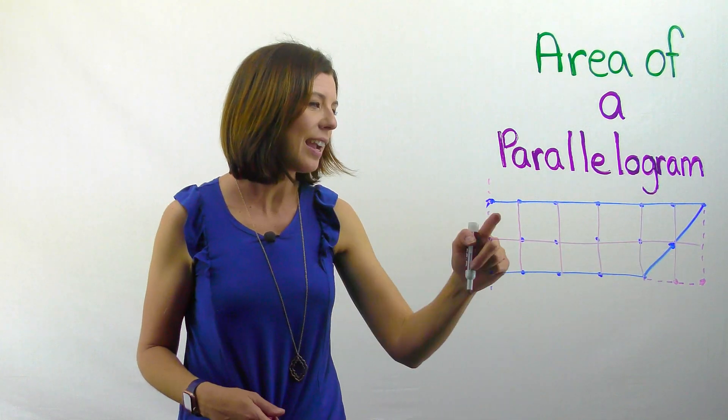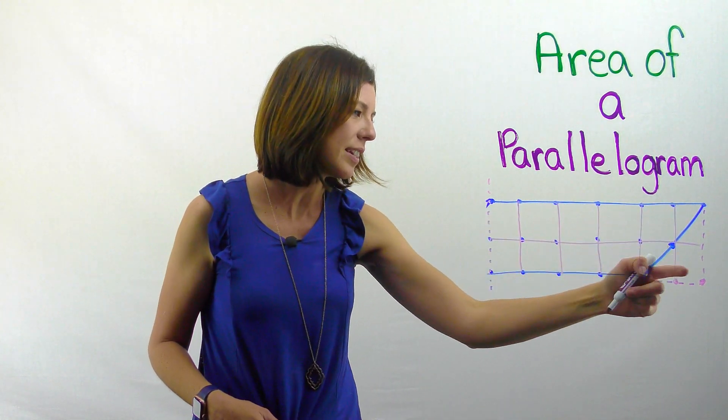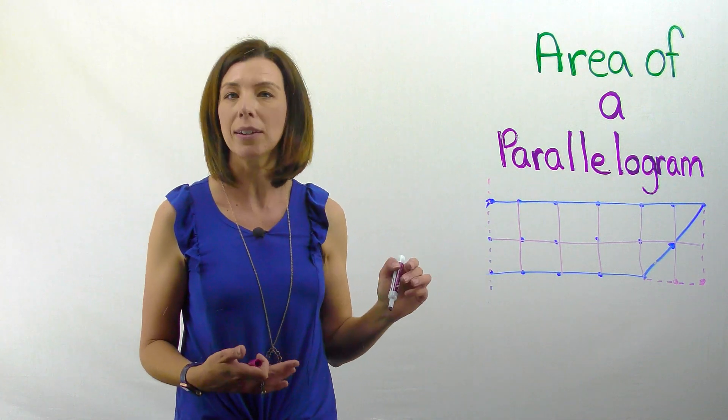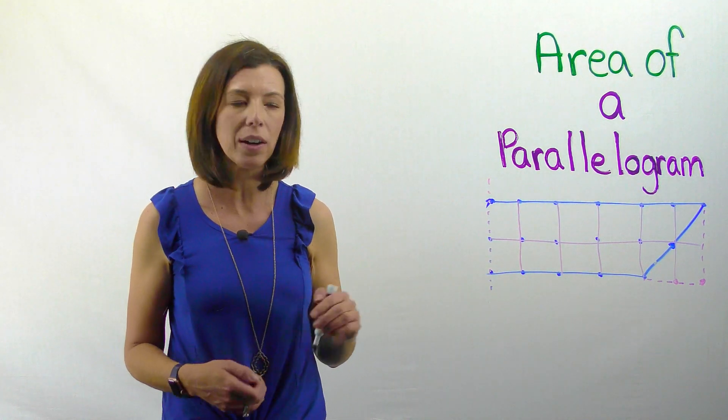one, two, three, four, five, six, seven, eight, nine, ten, eleven, twelve. My area for this parallelogram is 12 square units.